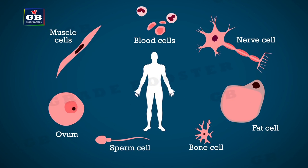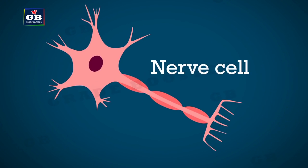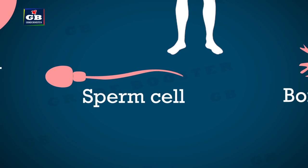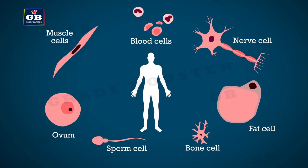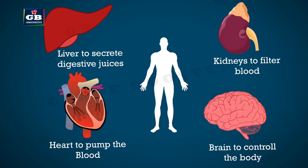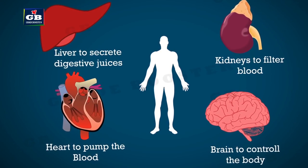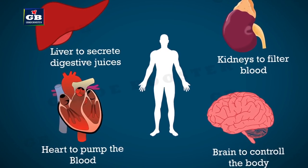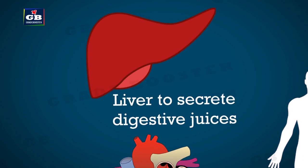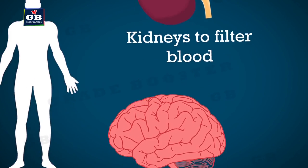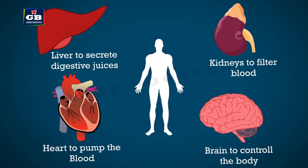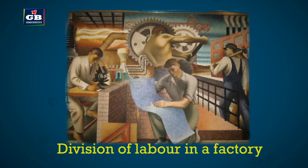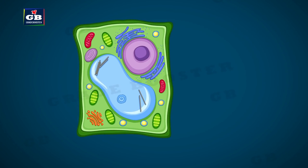Different types of cells in our body include muscle cells, blood cells, nerve cells, bone cells, ovum, sperm cells, and fat cells. Their different sizes and shapes depend on the function they perform. Our body has different systems for different tasks — the heart pumps blood, the liver secretes digestive juices, the kidneys filter blood, and the brain controls the body. Different jobs are done by different parts, which we call division of labor. This same principle applies inside a cell.